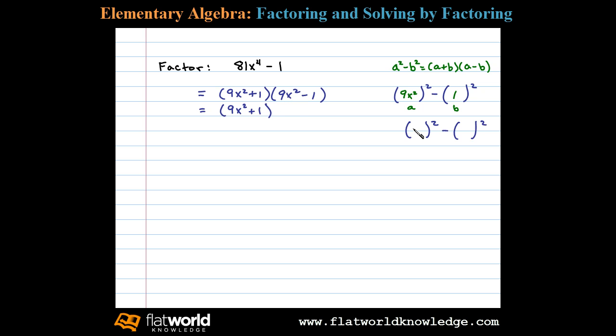9x^2 factors as (3x)^2, and again 1 is 1^2. Applying the difference of squares formula again, this time a is 3x and b is 1, so we can factor 9x^2 - 1 as (3x + 1)(3x - 1).